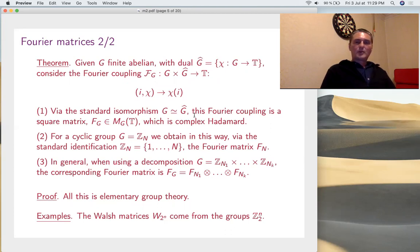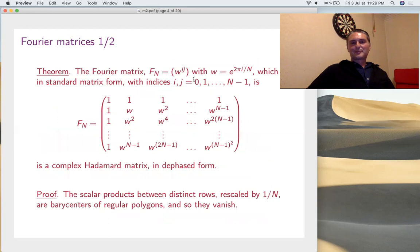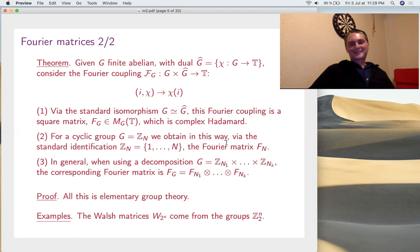Now, for a cyclic group, we obtain the Fourier matrix F_N. Why is that true? Because the cyclic group, the characters are exactly powers of these roots of unity. i goes to w to the i. So, you get exactly this matrix here, which might look a bit scary in matrix form, but as long as we don't write matrix form, things are just trivial. This is something trivial, actually.